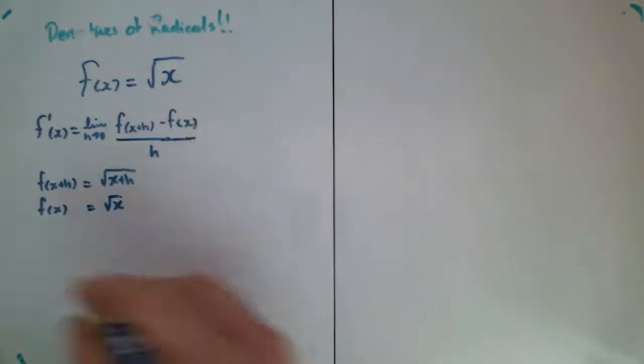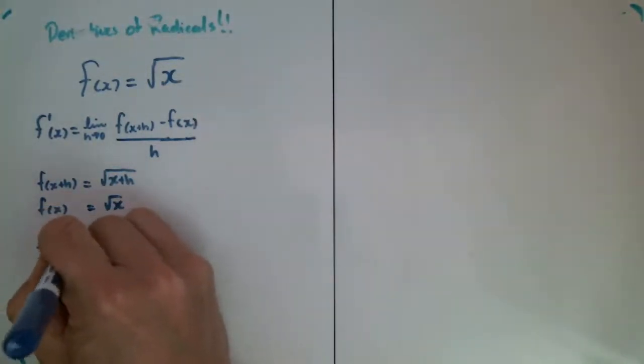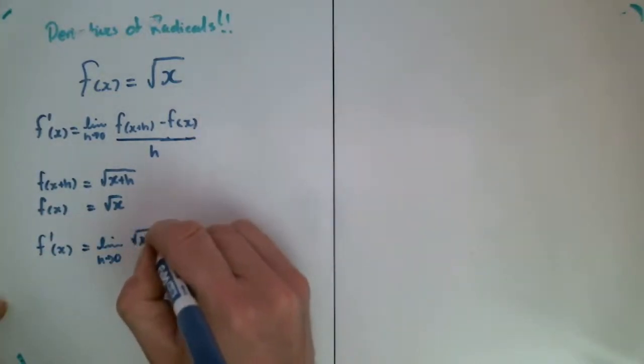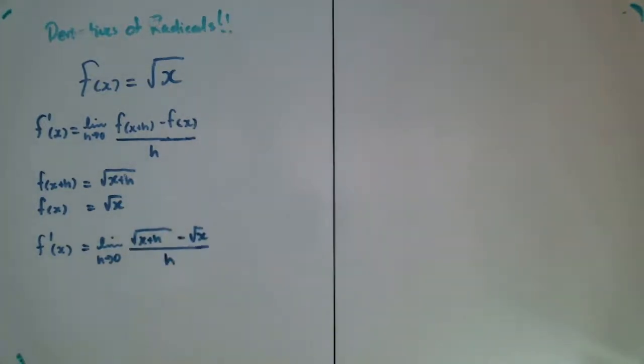Let's put this into the difference quotient. The slope function is equal to the limit as h goes to zero of the square root of x plus h minus the square root of x all divided by h.